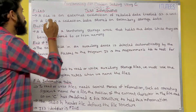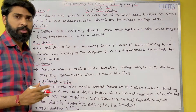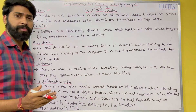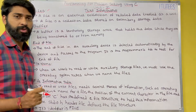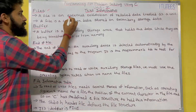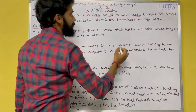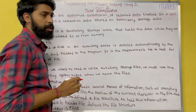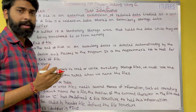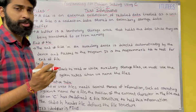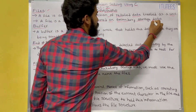So what is a file? A file is a collection of data that is stored on a secondary storage device. A file is an external collection of related data, treated as a unit. The data is stored on some secondary storage device.